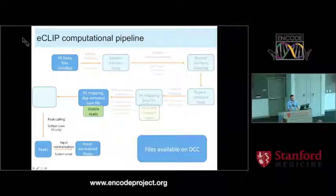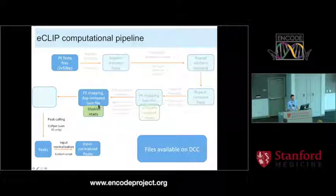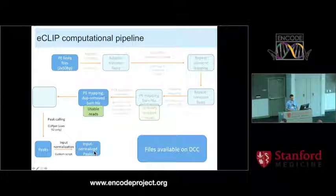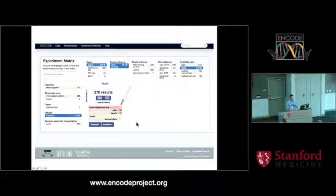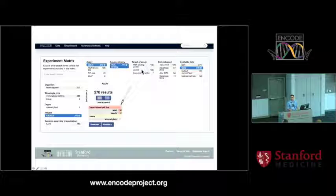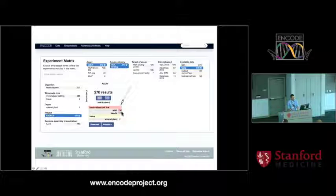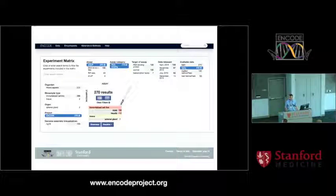If you go to the DCC, there are four files that exist: raw FASTQ files, mapped usable reads, peaks (all called peaks), and input-normalized peaks. If you search for ECLIP, you get 270 datasets - that's because each RNA binding protein has a paired control. Right now there are 135 ECLIP datasets released, with more coming soon. They cover both K562 and HepG2 cells roughly equally, and we're starting to do a few in NTEX tissue samples, so you'll start to see some human tissues as well.